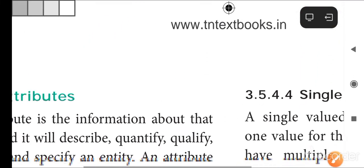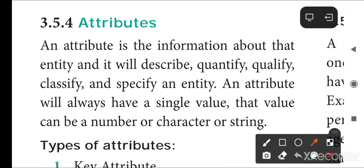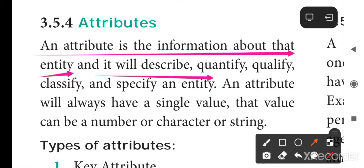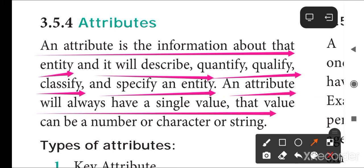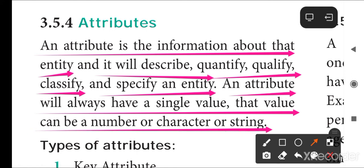The next topic is attributes. An attribute is the information about that particular entity. It will describe, quantify, qualify, classify, and specify an entity. An attribute will always have a single value or multi-value — at least a single value. The value provided may be either a number, character, string, or literal.